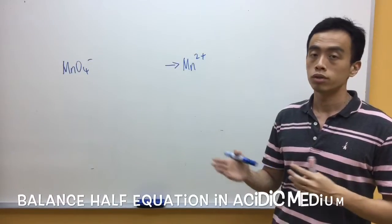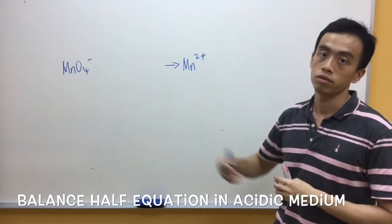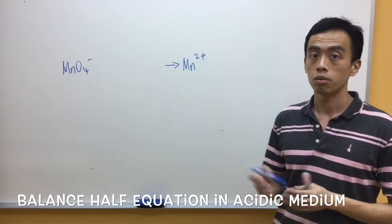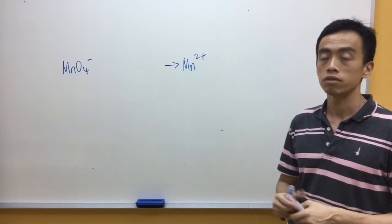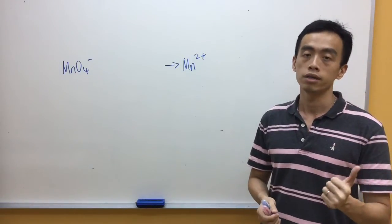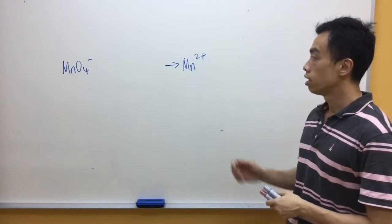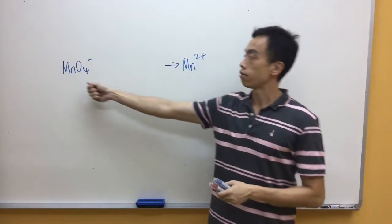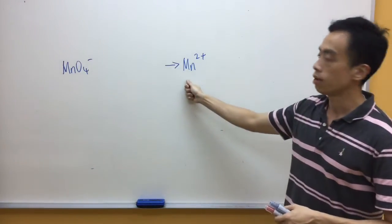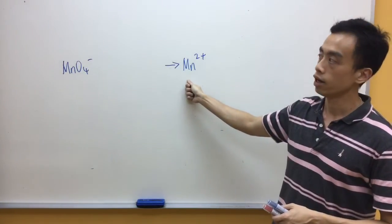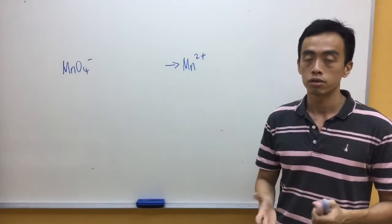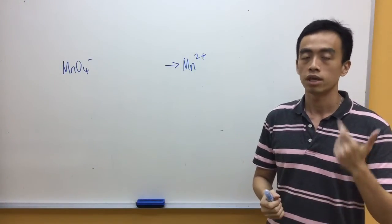Now let's use this example to balance a half equation in acidic medium. Remember the 4 steps. The first step is to balance the element. I have 1 Mn on the left-hand side and 1 Mn on the right-hand side, so manganese is balanced. Step 1 is settled.